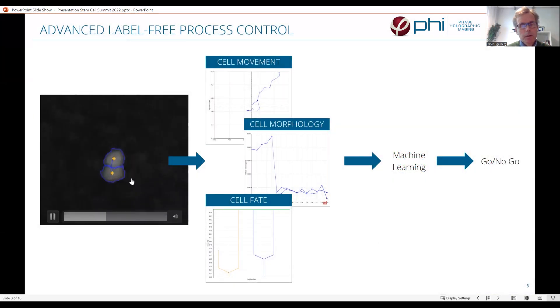On the left, you see a cell which curls up and divides into two daughter cells. As the cells have been tracked, we can study the cell movements of first the mother cell and then the two daughter cells which take off in separate directions. We can also study the cell morphology, in this case, the cell volume of the cells. Here you have the mother cell and the two daughter cells after division.